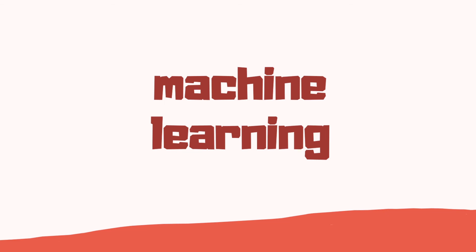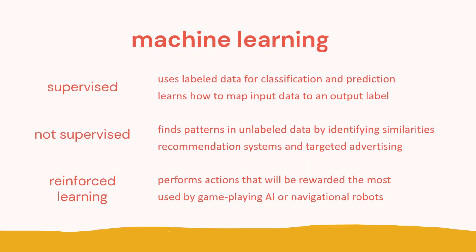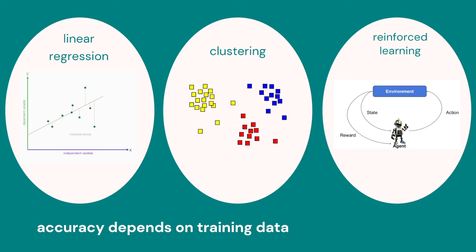Another way we might access and analyze data is using machine learning, which has many different approaches. With supervised machine learning we give labeled examples, and the model learns from the input to produce the output. Unsupervised learning finds patterns like clustering. We also have reinforcement learning, where the system tries something and if it works it receives a reward. Linear regression is a type of supervised learning where we map examples and can predict values based on other data.